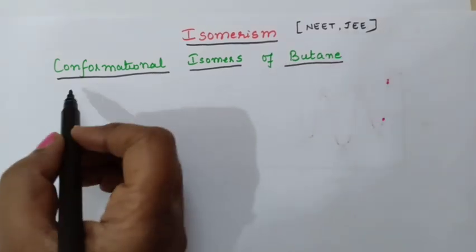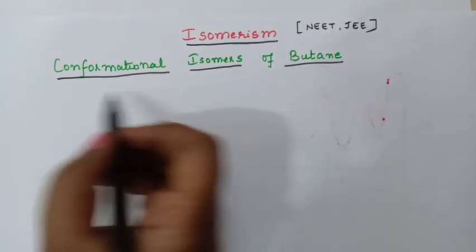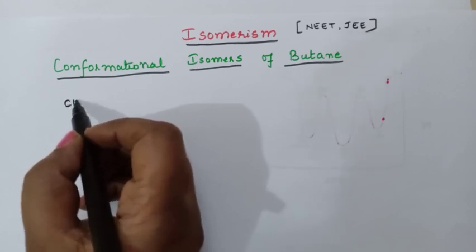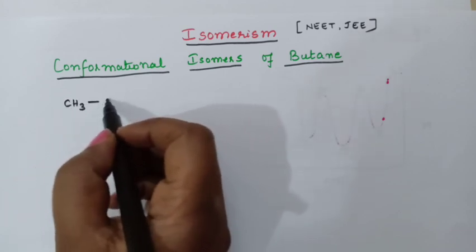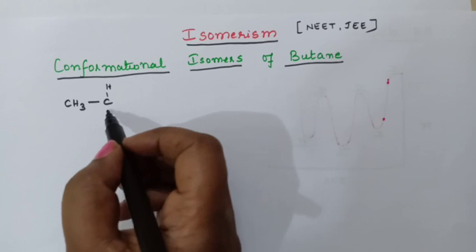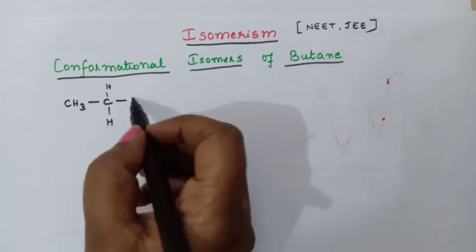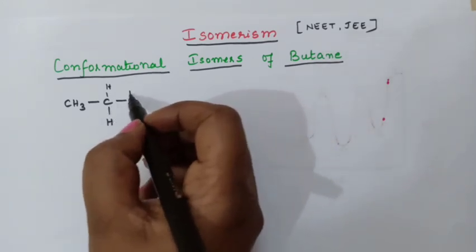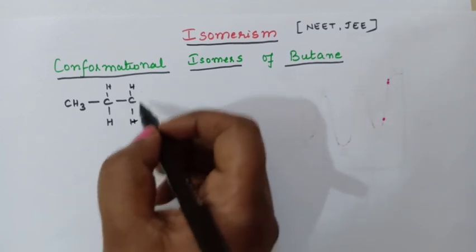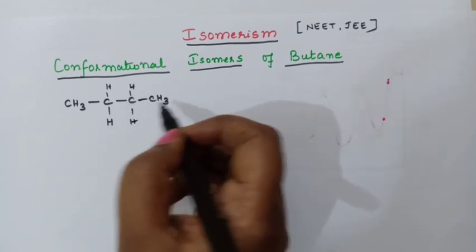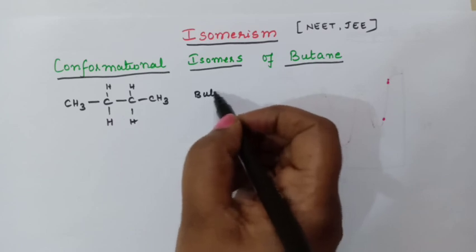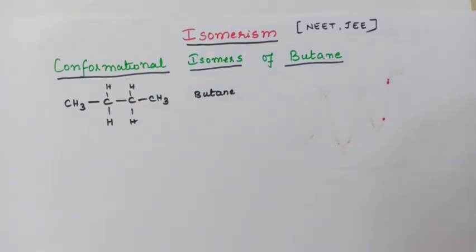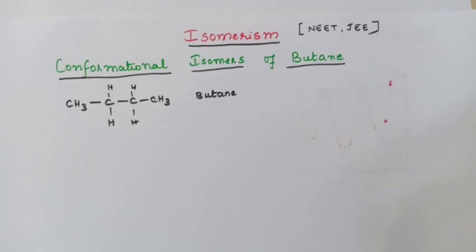First let us write the structure of butane. It is CH3, C, hydrogen, hydrogen. How many carbon atoms will be present in butane? 4. So this is butane, and for this we are going to write the conformational isomers now.